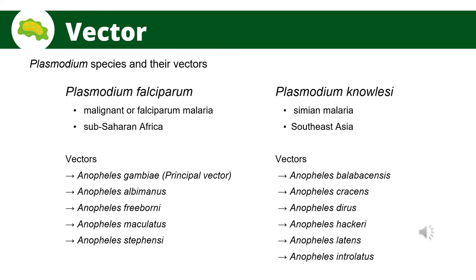Plasmodium falciparum is a protozoan parasite that causes malaria in humans. Also known as malignant or falciparum malaria, it is the most deadly type of malaria, with the highest incidence of complications and mortality. It is much more prevalent in sub-Saharan Africa than in many other regions of the world. Its known vectors are Anopheles gambiae, which is its principal vector, Anopheles albimanus, Anopheles pharoensis, Anopheles maculatus, and Anopheles stephensi.